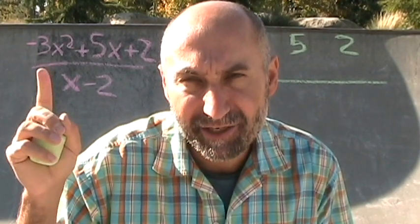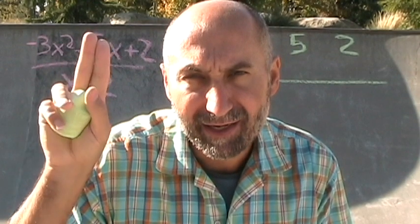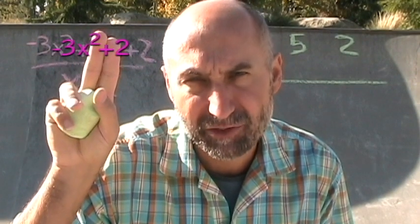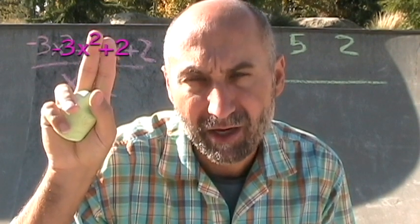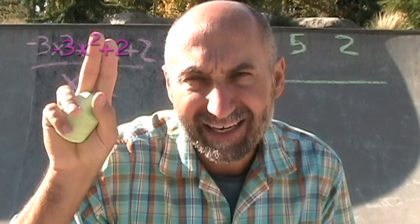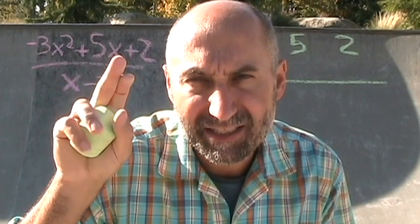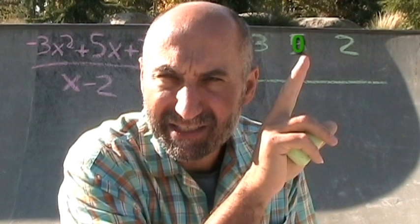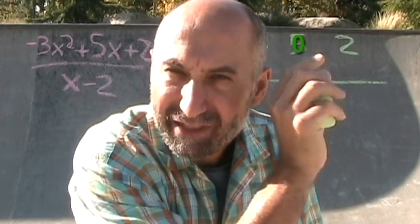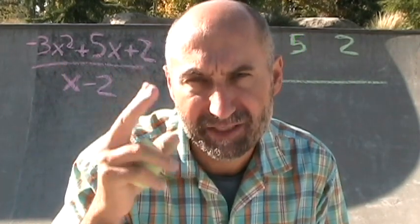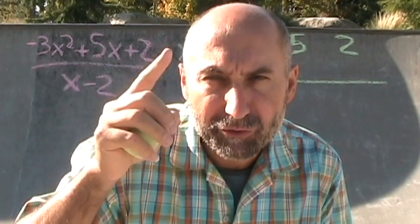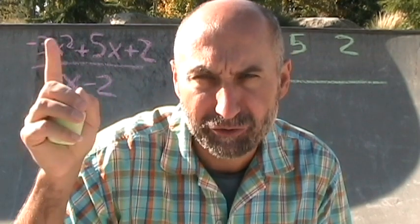So if this thing here was negative 3x squared and this 5x was missing, so it was negative 3x squared plus 5, what you would have to do is put 0x here. So this term here, this number here would be 0. You need the place marker for all the missing terms in your numerator, in the polynomial that's your numerator.